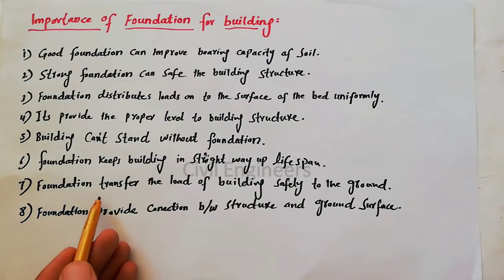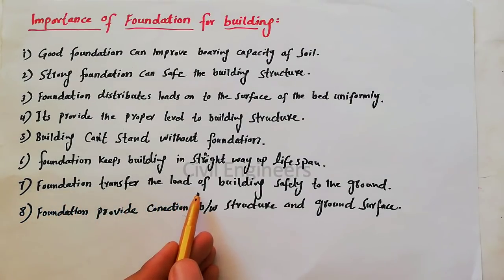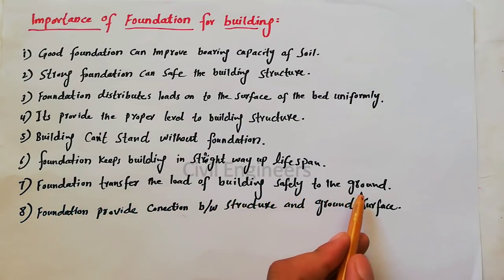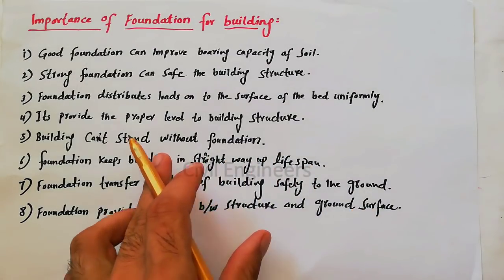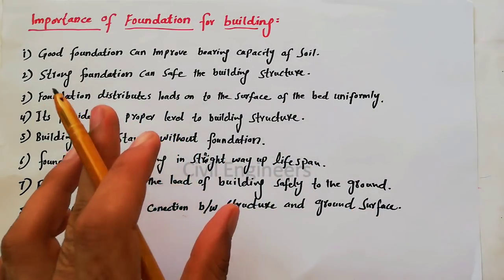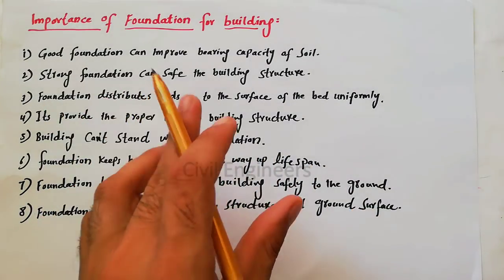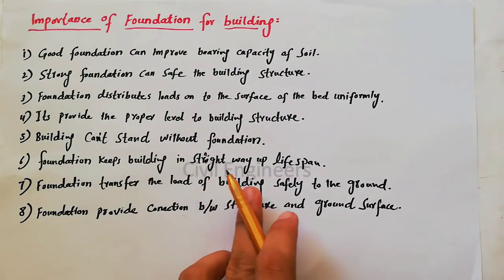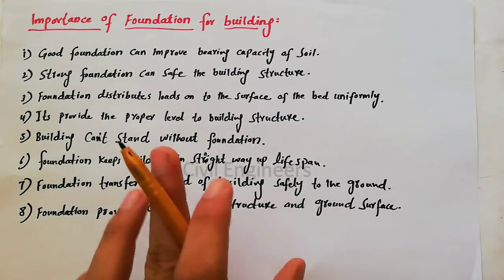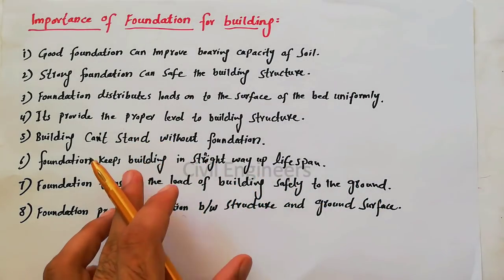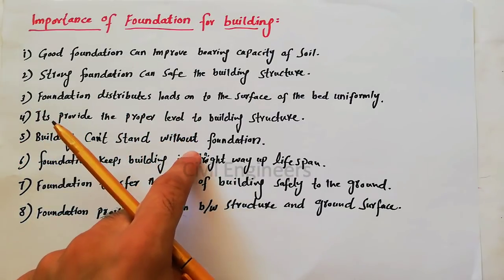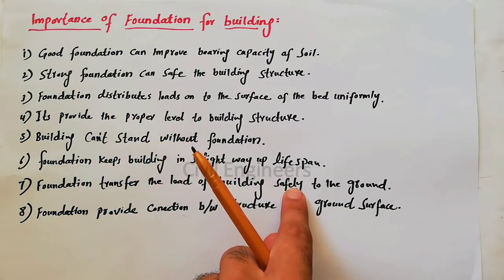The seventh point is that the foundation transfers the load of the building safely to the ground level. Your building load can transfer safely to the ground level. The superstructure load can transfer to the substructure.